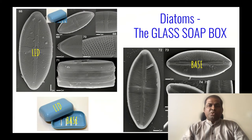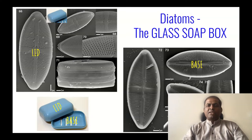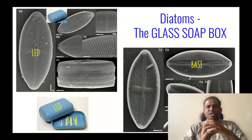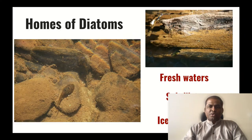When we elaborate the cell structure of a diatom, it is comparable to a soap box or a petri dish. If we take a soap box, we have a lid and a base, and inside we keep the soap. Diatoms are made similarly — there is a lid and there is a base, and inside this the cell organelles are present. On the left you are seeing the lid, and on the right you are seeing the base of the soap box.